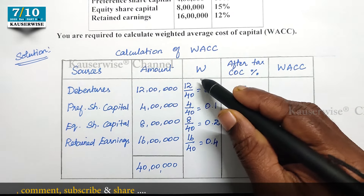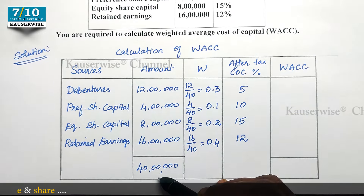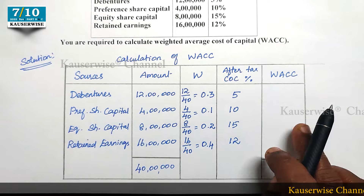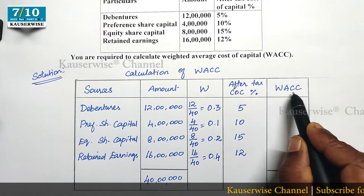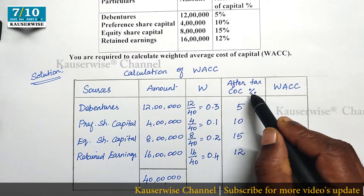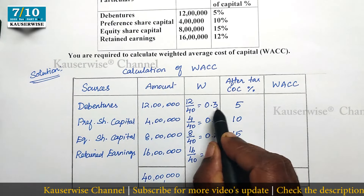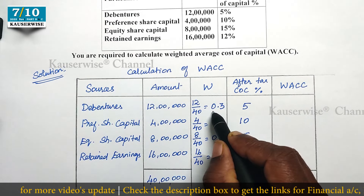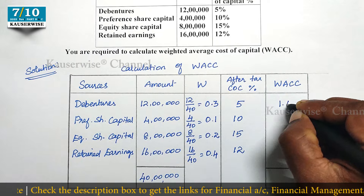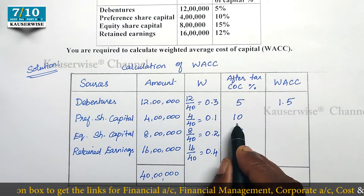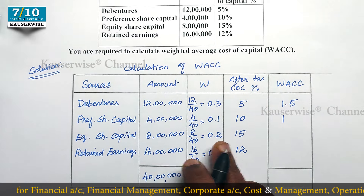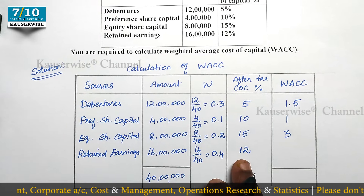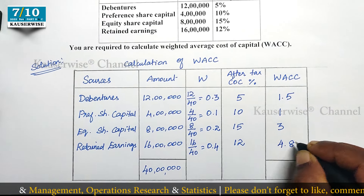This is the formula to find out weights — each component divided by total gives you the weight for each component. After finding the weights, we can now find out the Weighted Average Cost of Capital, since we have the after-tax cost of capital and proportions. Simply multiply weights by the cost: 0.3 × 5 = 1.5; 0.1 × 10 = 1; 0.2 × 15 = 3; 0.4 × 12 = 4.8.